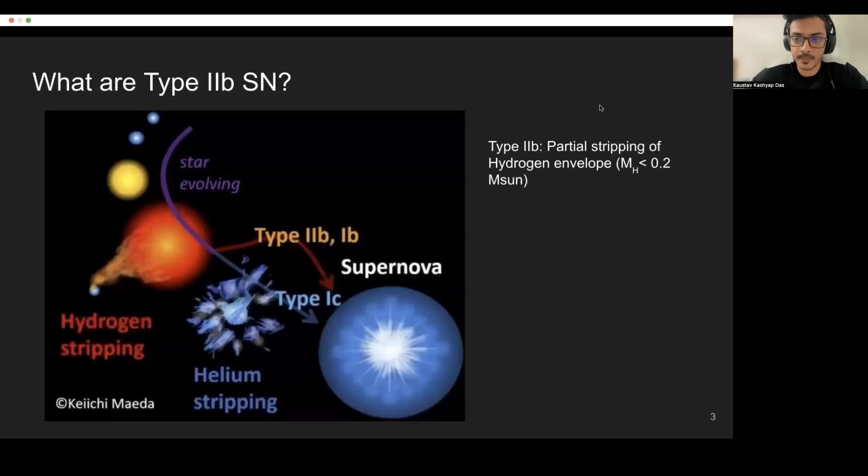Just for those who are not familiar with the very confusing stripped envelope supernovae classifications, Type IIb supernovae are those which just before explosion have been partially stripped of their hydrogen envelope with a hydrogen mass left of around less than 0.1 solar mass.